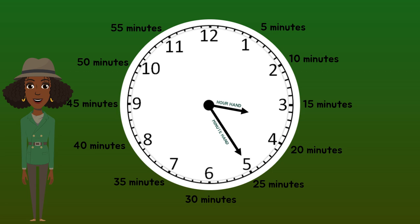When the minute hand gets to the 12, it represents 60 minutes, but we don't say 60. When the minute hand gets to the 12, we say o'clock. That means that 60 minutes, or an hour, has passed and a new hour starts.